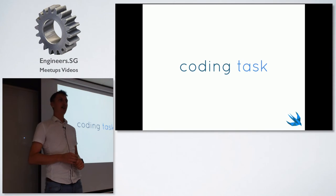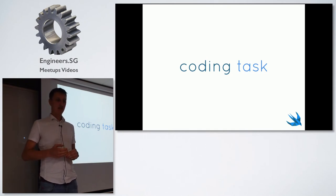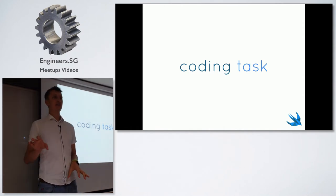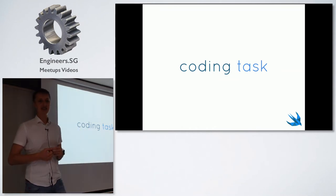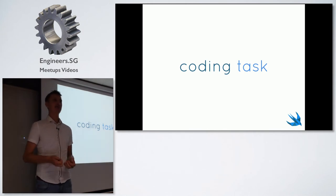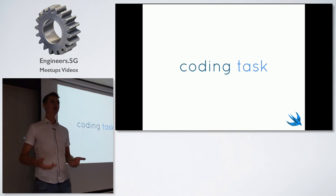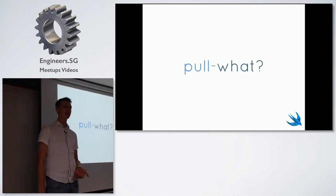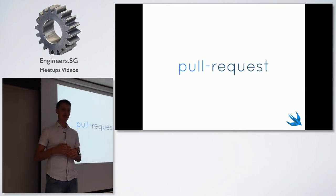One day I received a coding task from a company I was applying to. The task said I should develop an application with a certain functionality, and I'd get extra points for writing unit tests. But the most surprising thing was that I was supposed to send the results back via a pull request — and at that time, for me, it was like: cool... what's a pull request? And for those of you who use Git flow, it's obvious.